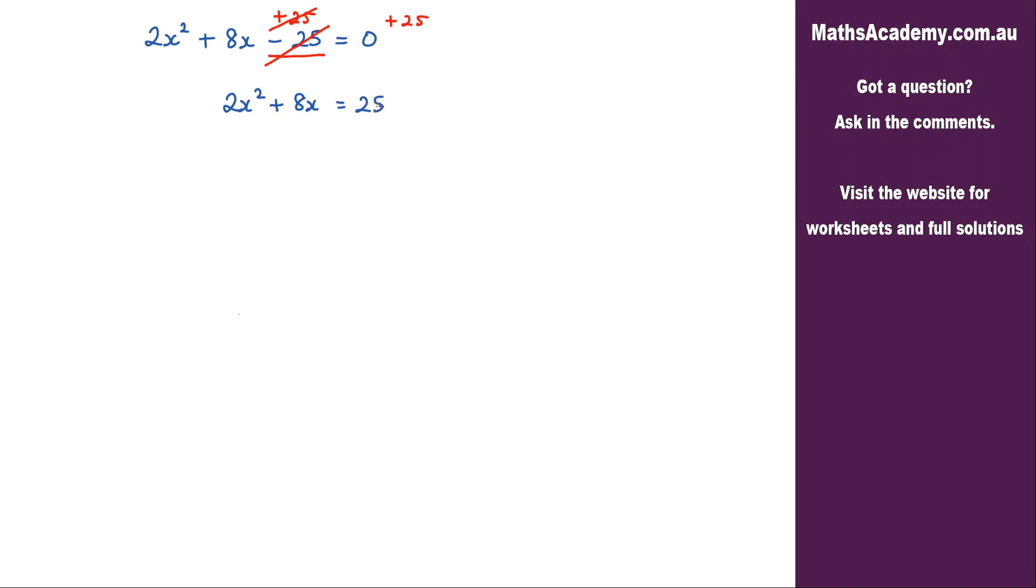The next step is to check the coefficient of the x² term. We need that to be a 1. Currently I've got a 2, so I need to divide this term by 2, and if I do that to the x² term I must do it to every other term, again to keep the equation balanced.